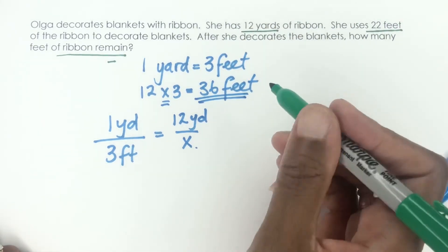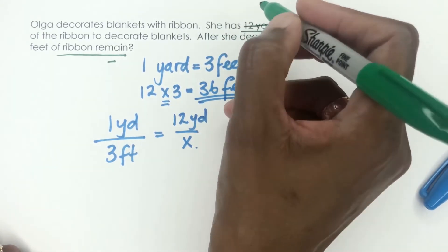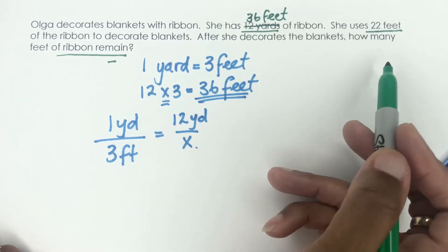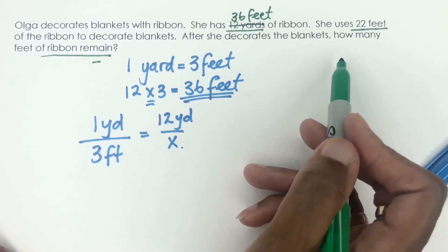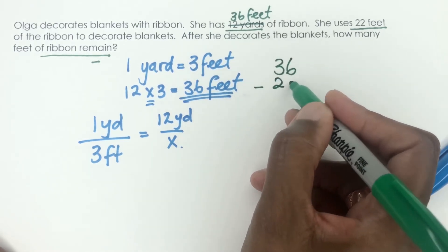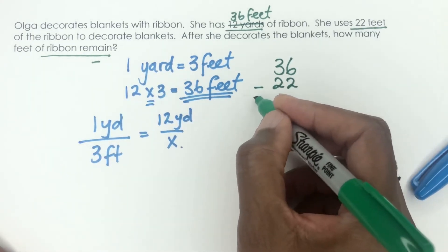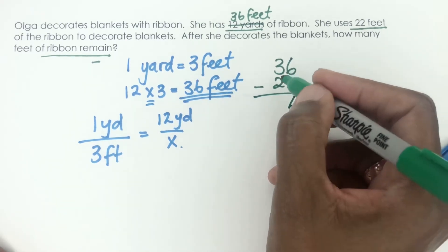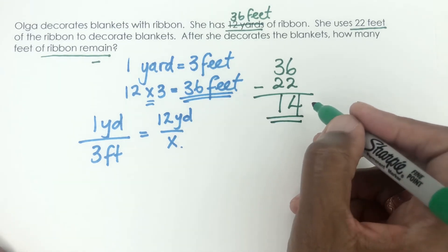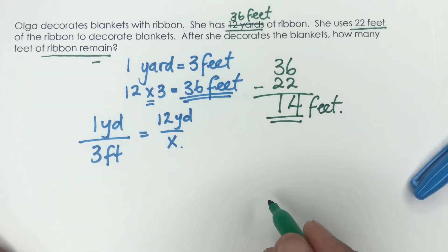Now that we've done the conversion, Olga has 36 feet of ribbon and she uses 22 feet. So we calculate 36 feet minus 22 feet — and we're subtracting because the problem asks how much ribbon remains. 6 take away 2 gives us 4, 3 take away 2 gives us 1 — so she has 14 feet of ribbon remaining.